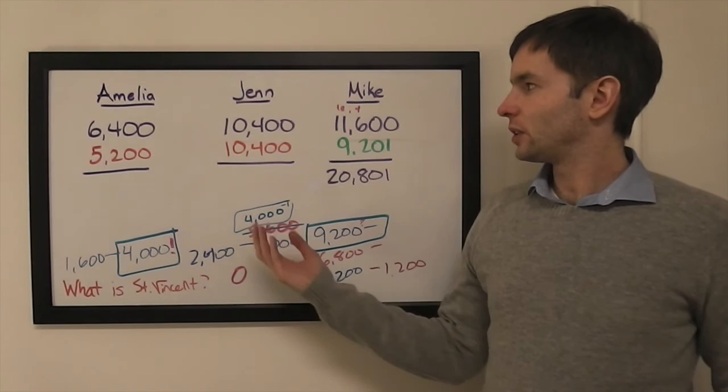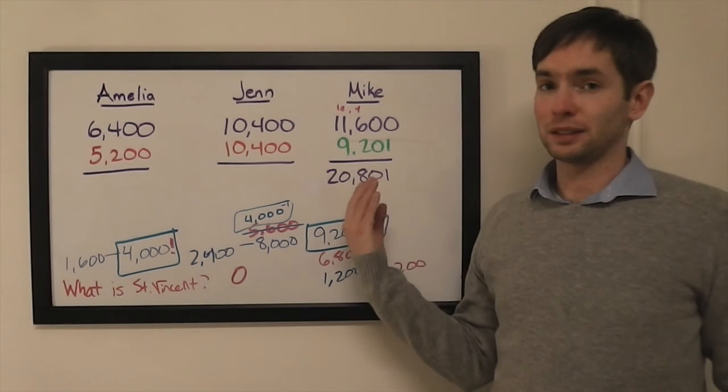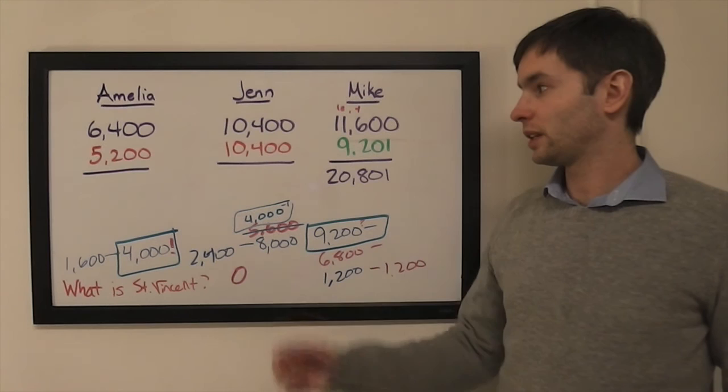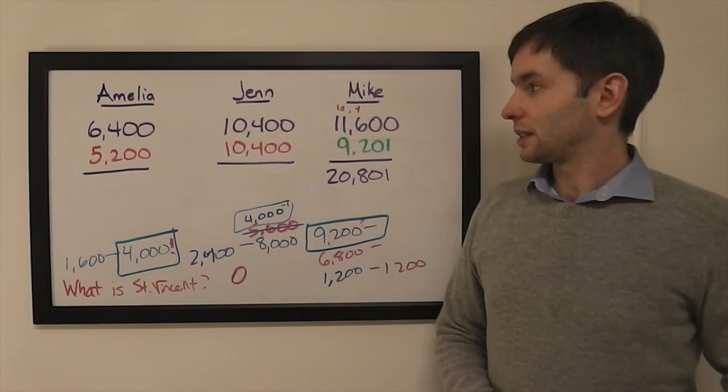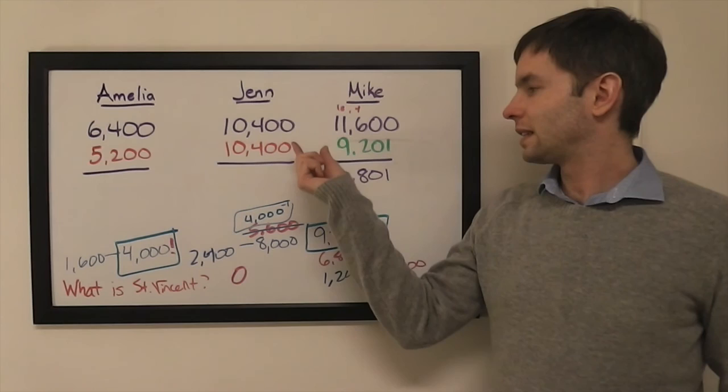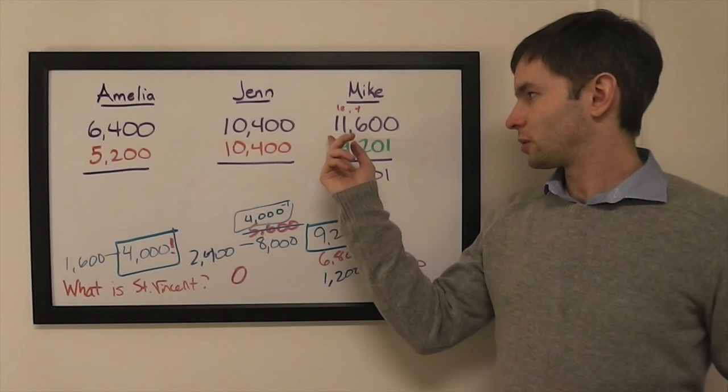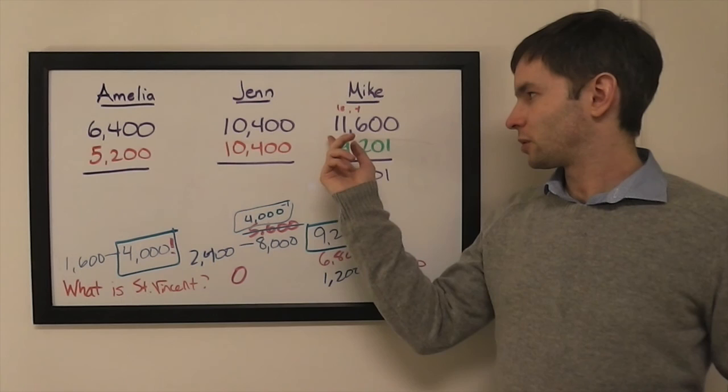Amelia and Jen both kind of threw their chances of winning away because Mike is a good player. He's probably going to bet on himself. And he goes for that lockout. You can't win unless he misses. So you might as well position yourself to win if he does miss. And Amelia, I don't know what that 5,200 amount was. I think she just took the difference between these two and forgot that you actually have to double it on the downside.